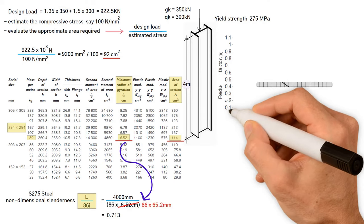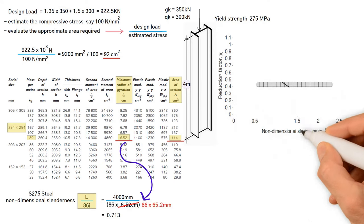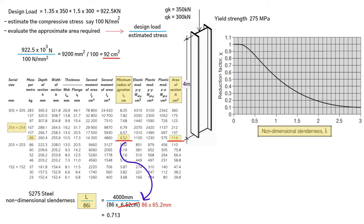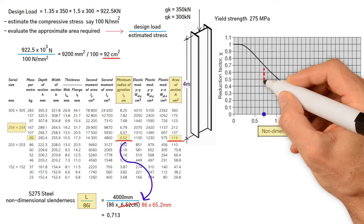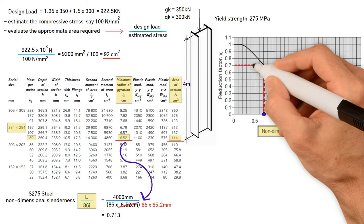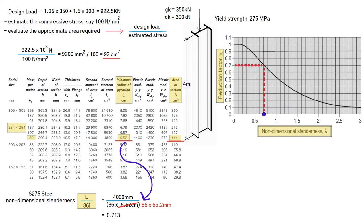From the design curve we should be able to obtain the reduction factor as we get a non-dimensional slenderness of 0.713. If we extend the line to meet at this point with the curve, this gives us approximate figure of reduction factor x which equals 0.7.